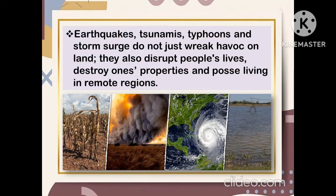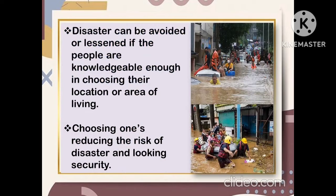Earthquakes, tsunamis, typhoons, and storm surges do not just wreak havoc on land. They also disrupt people's lives, destroy one's properties, and affect those living in remote regions. Disasters can be avoided or lessened if people are knowledgeable enough in choosing their location or area of living, reducing the risk of disaster, and seeking security.